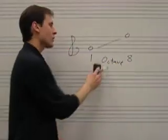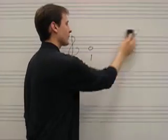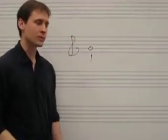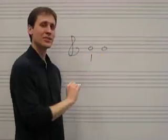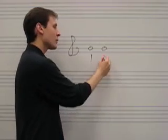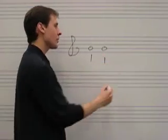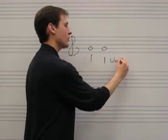The other interval that has a special name is the unison interval. If you go from G to that very same G, then numerically it's 1, but instead of calling it 1, we call it unison.